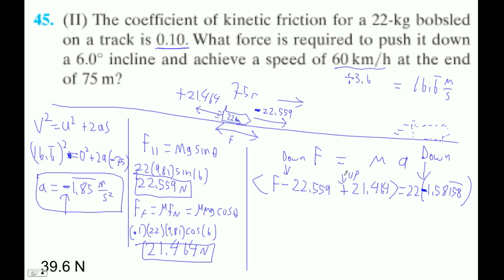Okay, so I guess what I'm going to do is I'm going to go 22 times negative 1.85158. I'm going to subtract. I'm going to go minus 21.464 and I'm going to go plus 22.559. And let's see what happens when I hit enter. And that's because I'm not very good at typing numbers. Let's try this again.